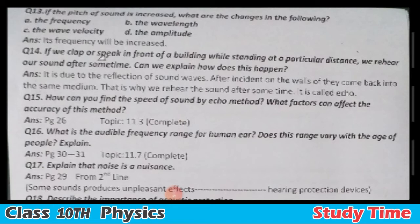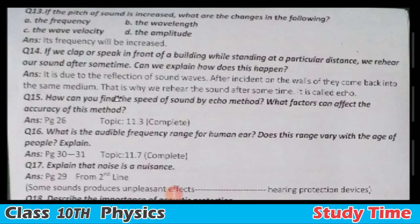Question number fourteen: If we clap or speak in front of a large building while standing at a particular distance, we hear our sound again after some time — how does this happen? It is due to the reflection of the sound wave. After the sound is incident on the walls, it reflects back into the same medium. This reflected sound is heard again after some time, and it is called an echo.